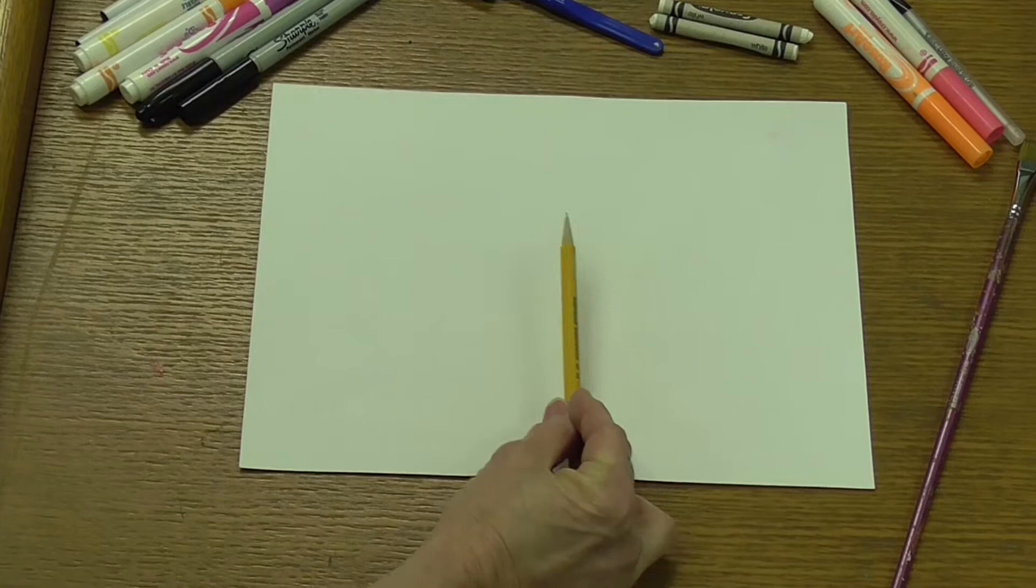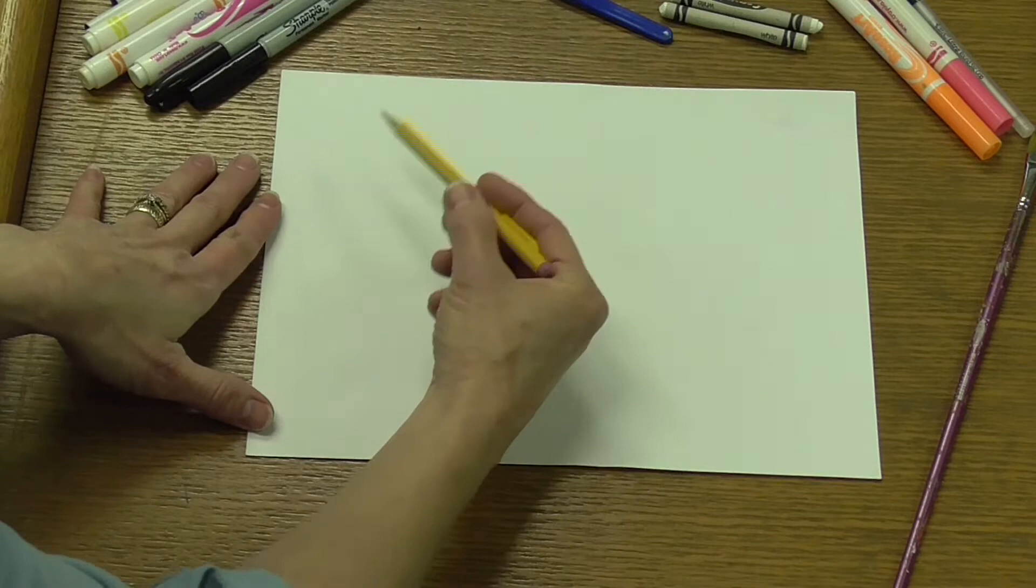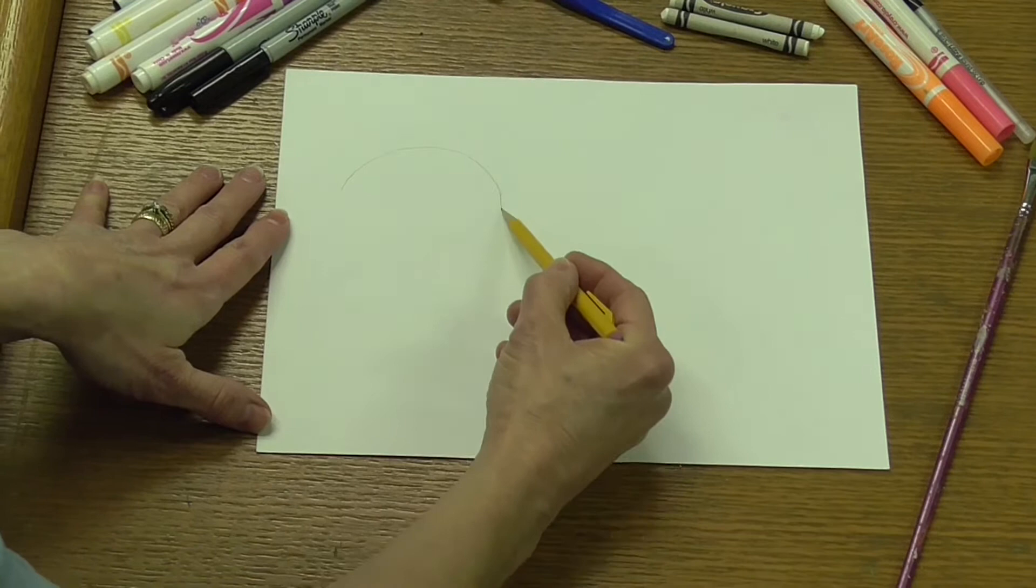When you think about composition, it's better that things aren't right in the center. We're going to draw about three different dandelions, more on one side or the other. I'm going to lightly draw an outside circle because we're going to erase this later. They don't all have to be the same size—I'll make this one a little smaller, maybe one down here.